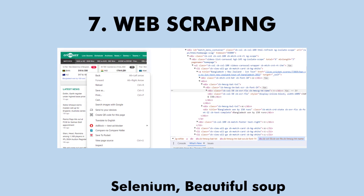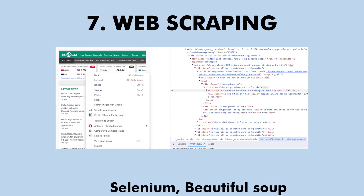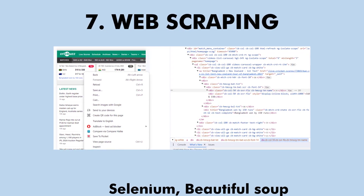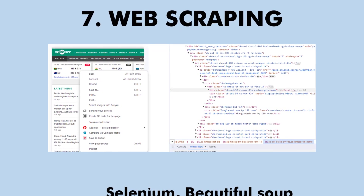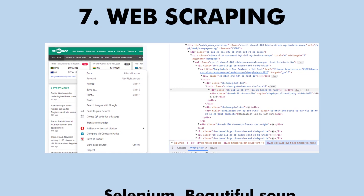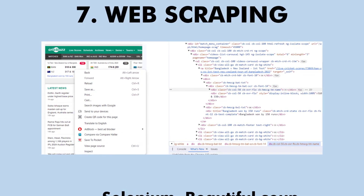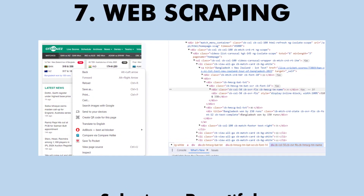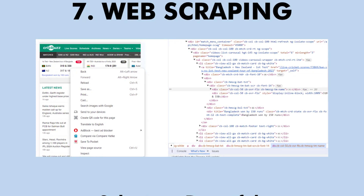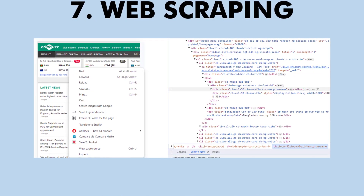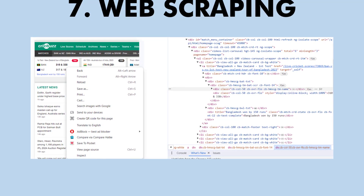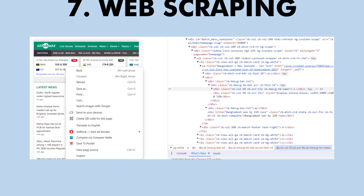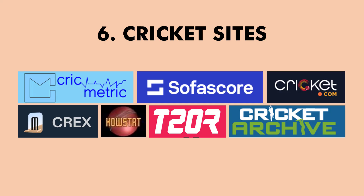Number 7 is web scraping. This is something for developers — if you know how to code, check out a couple of Python libraries: Selenium and Beautiful Soup. Note that you can't do this on an app, but you can write a web scraper for websites. Both of these libraries work well for this purpose.